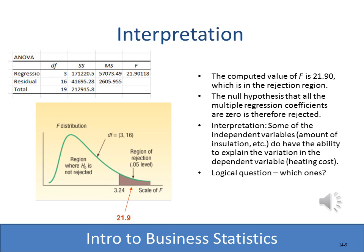Excel computed an F value of 21.9. Comparing that to the critical value of 3.24, we are much larger, so we reject the null hypothesis. This means that at least one of the independent variables is a significant predictor of the dependent variable.